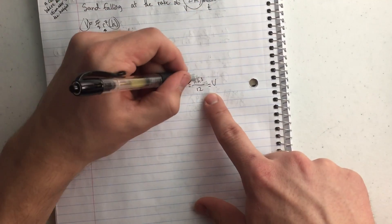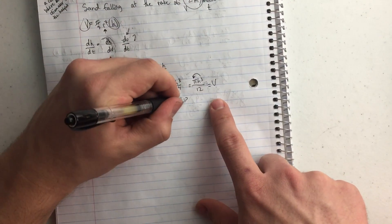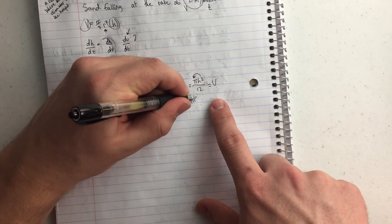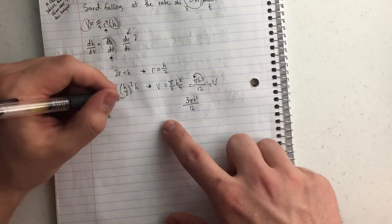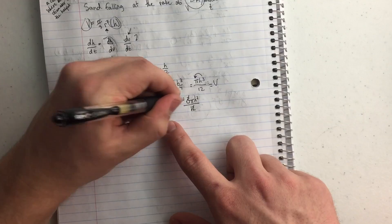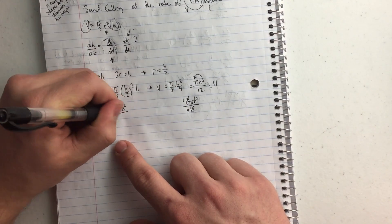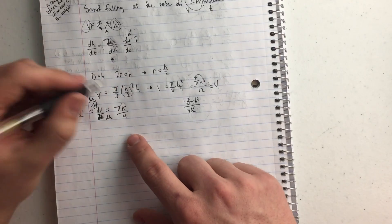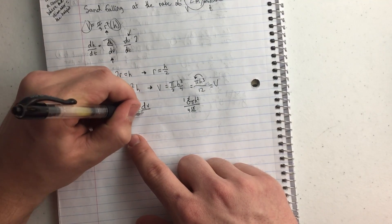And so the derivative of this, I'm going to move the 3 down in front of the pi. So I have 3 pi h squared, because that's going to move down by 1 by the power rule, over 12. And so then I'm going to reduce that, so I have pi h squared over 4. And that equals the change in volume over the change in height.